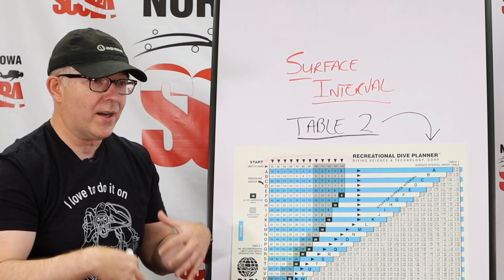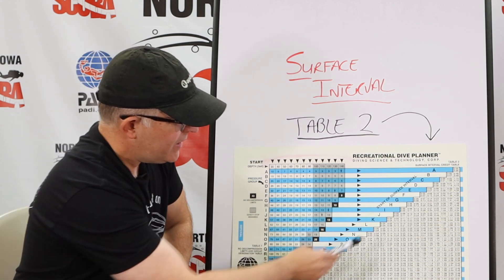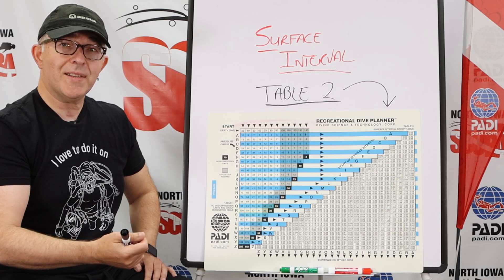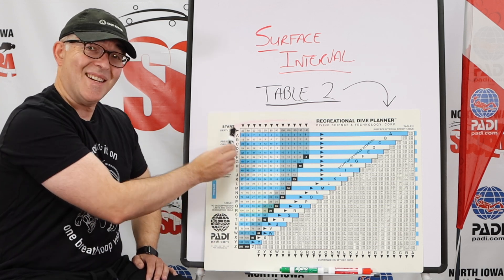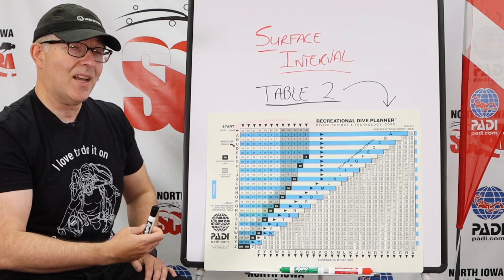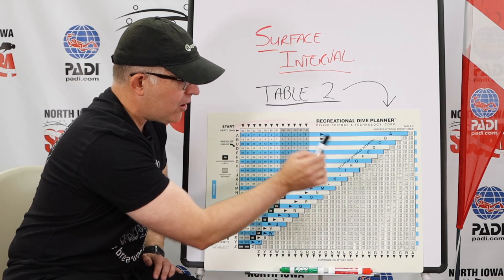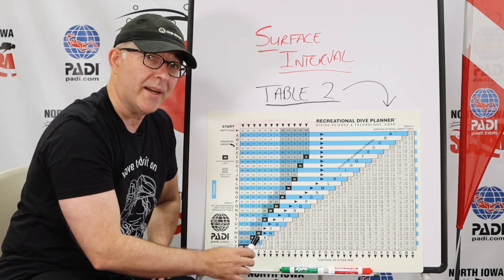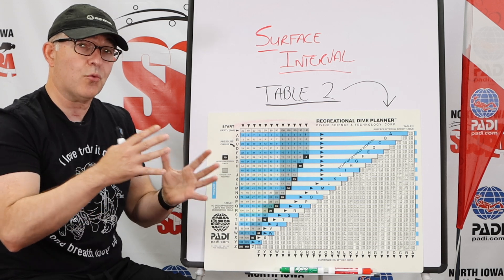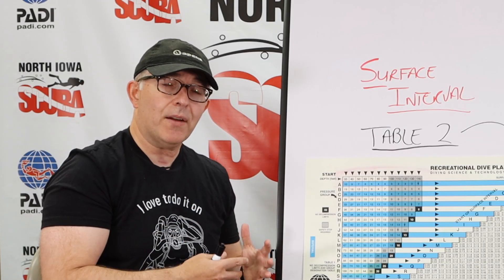Surface interval is basically the period of time from when I come to the surface and the amount of time I spend on the boat, on shore, out of the water. Along the top is the pressure group after the end of my dive. In our previous episode, we showed you a single dive where we started as an A diver, finished the dive, and came out of the water as a K diver before starting our surface interval. In this example, I'm going to choose a 30-minute surface interval. This is K — that's what I was when I came out of the water. I'm going to follow this along until I find the box that has 30 to 37 minutes, then follow all the way down to F. I have now changed from a K diver to an F diver.